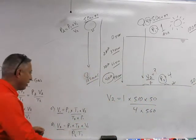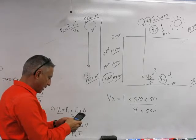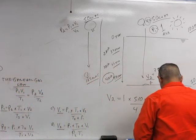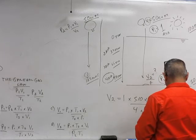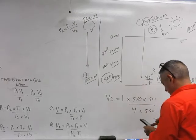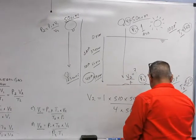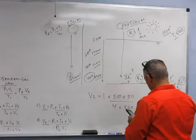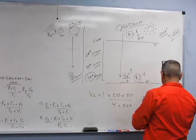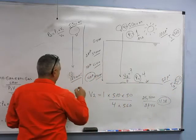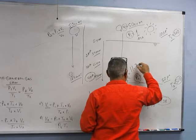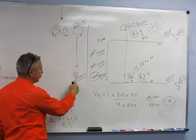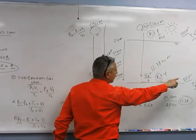Now we're going to take all that and figure out what happens. 1 times 510 times 50 is 25,500. We're going to say 4 times 560 is 2,240. 25,500 divided by 2,240. The answer to this is 11.38 cubic feet. So, no temperature, 12.5 cubic feet. Very cold temperature, 11.38. You've literally lost one cubic foot.